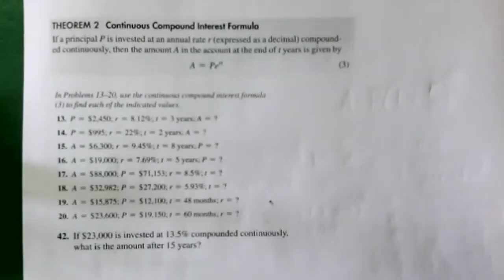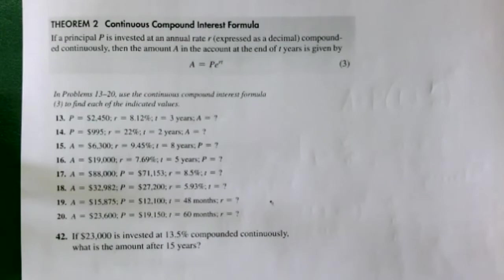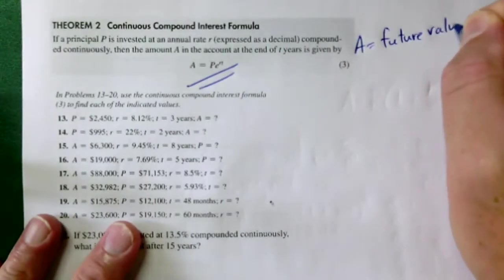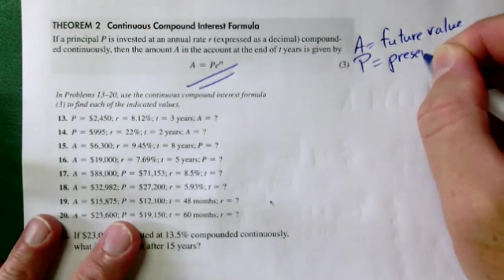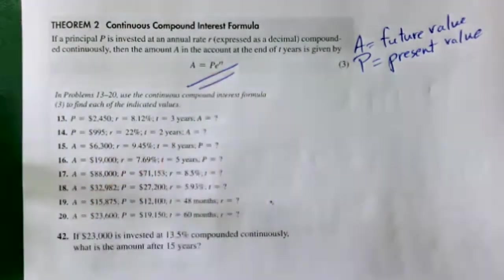The next formula is also compound interest, but considers what happens if you compound more than daily — more than 365 times. What if you compounded interest a billion times? Our formula still works, but a billion periods is getting close to compounding every instant. So why not let it go to infinity? It turns out A approaches a limiting value — and here is the continuous interest formula. A is future value, P is present value.